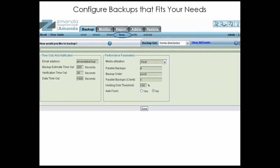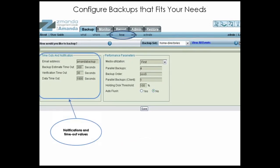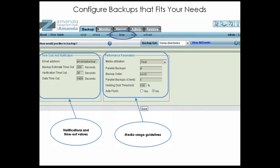On the Backup How page, you can specify the email address where reports and notifications are sent. You can also adjust timeout parameters for the fault-tolerant AMANDA Enterprise Smart Scheduler. If a client is missed on one backup run, it will automatically be picked up on the next backup run, and the schedule will be rebalanced to reflect the change, all without user intervention. You can also edit parameters that control media usage, simultaneous backups, and backup caching.